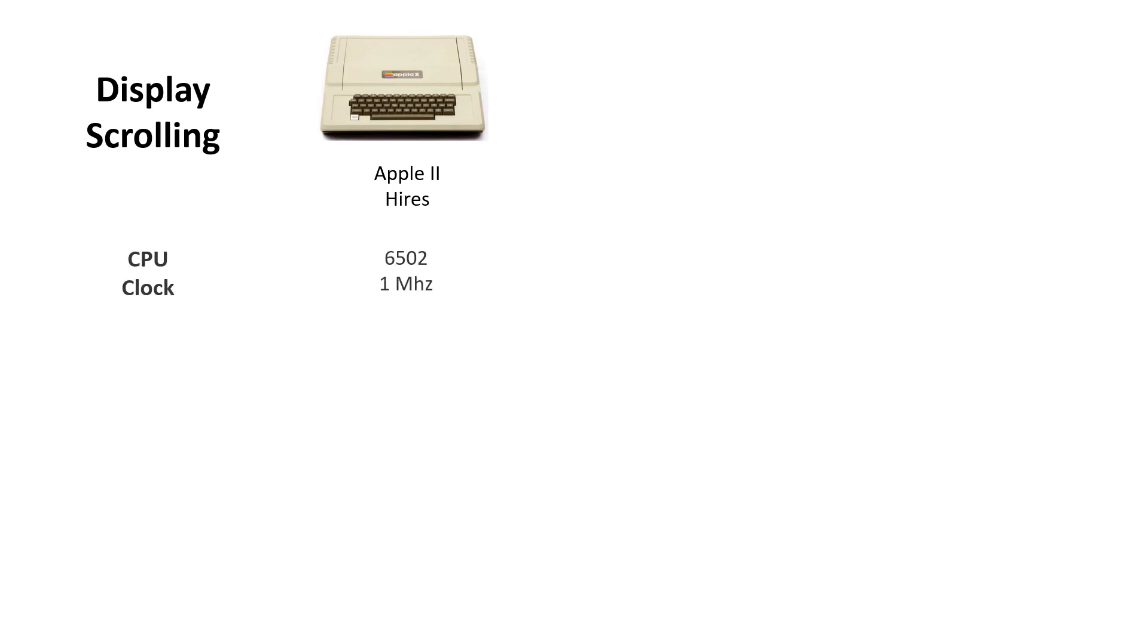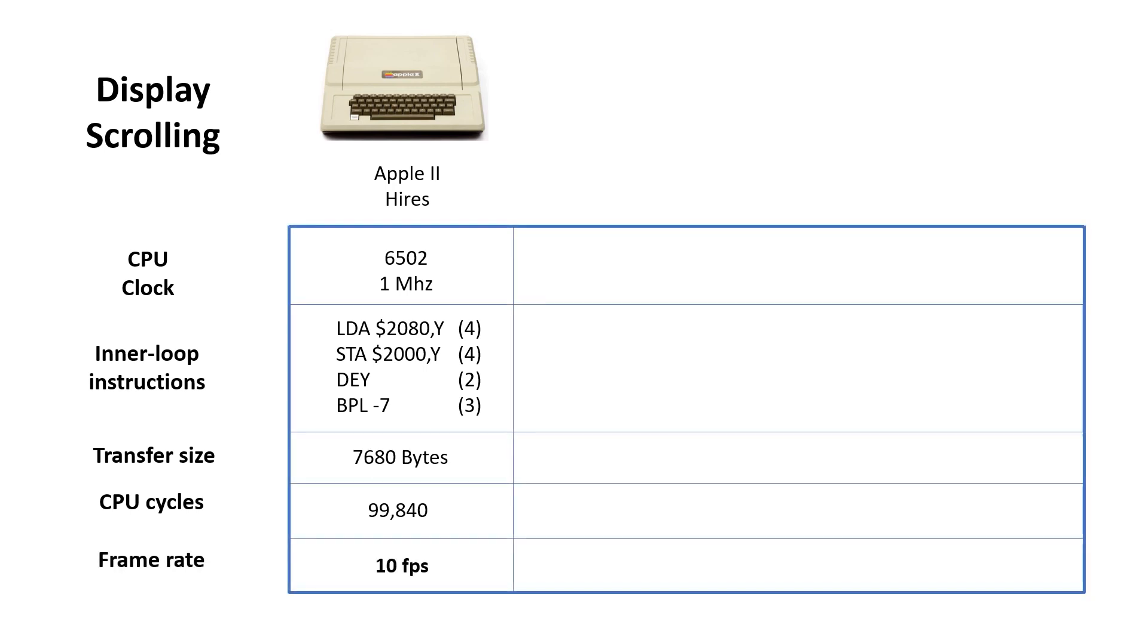The Apple II has a 6502 CPU running at 1MHz. The inner loop of the scrolling routine requires us to read a byte from memory, write it back, decrement some sort of counter, and then branch if appropriate. In high-res mode, we need to transfer 7680 bytes for a scroll. This leads to 99,840 CPU cycles, which means at full speed the CPU could do it at approximately 10 frames per second. This means to scroll an entire page, one row at a time, would take two and a half seconds. Now that's pretty unacceptable.